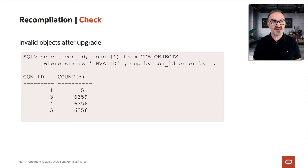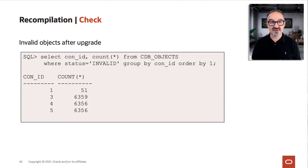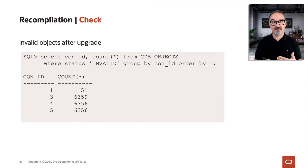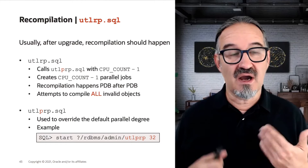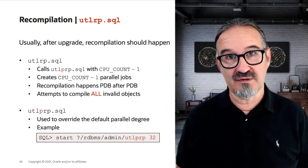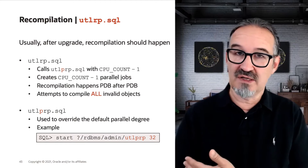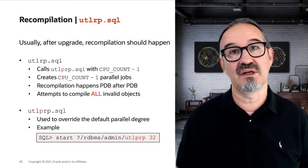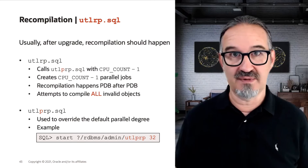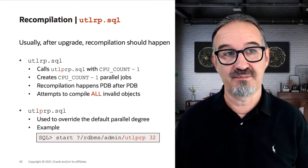Here we see a number of objects — the pdb$seed has been recompiled already, but we need to compile them. By default, this happens after the upgrade. When you run standard auto-upgrade or whatever tool you're using, a recompilation happens after the upgrade.